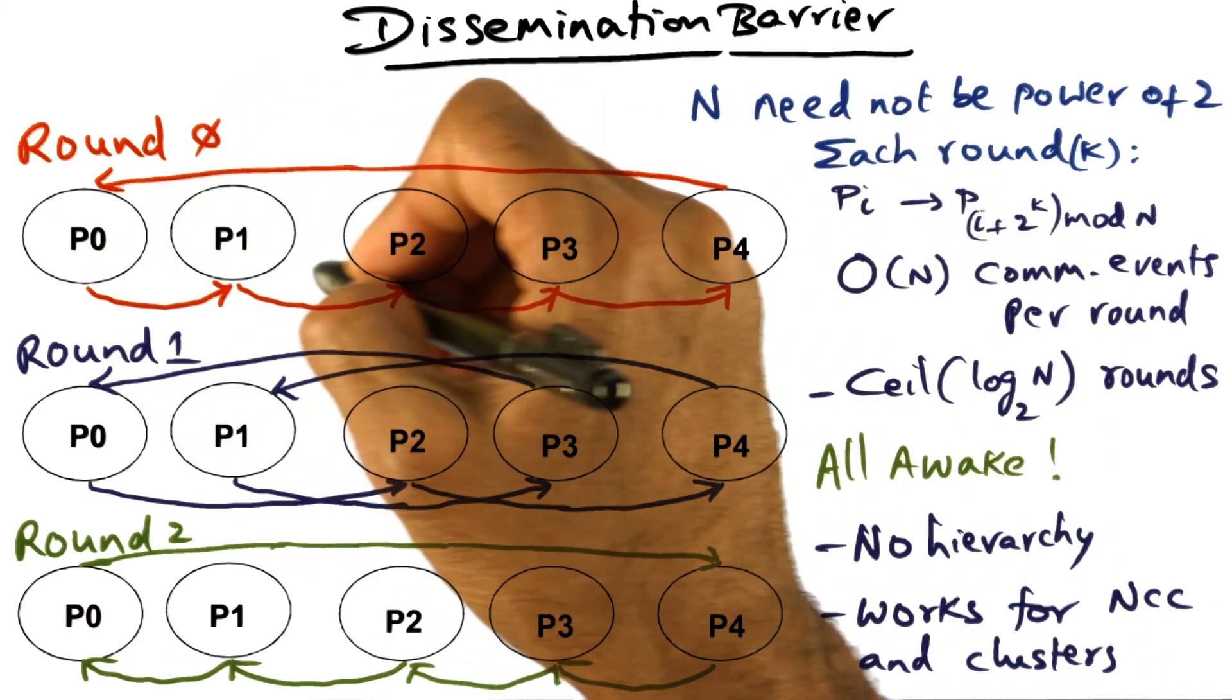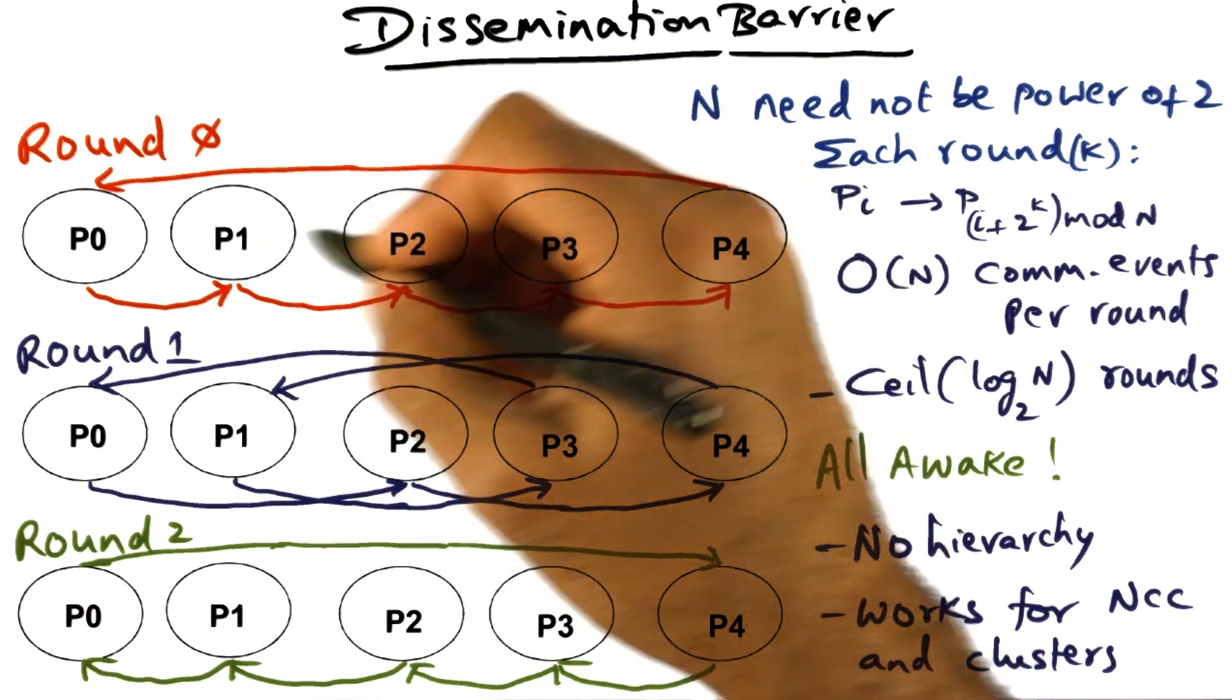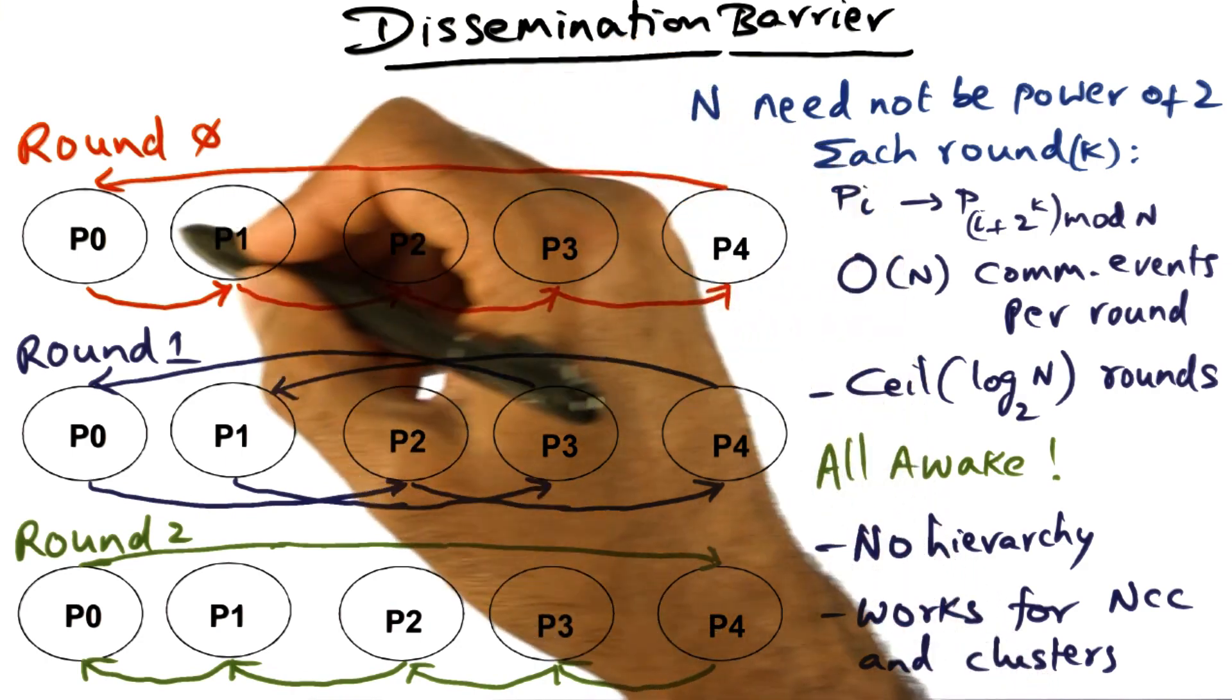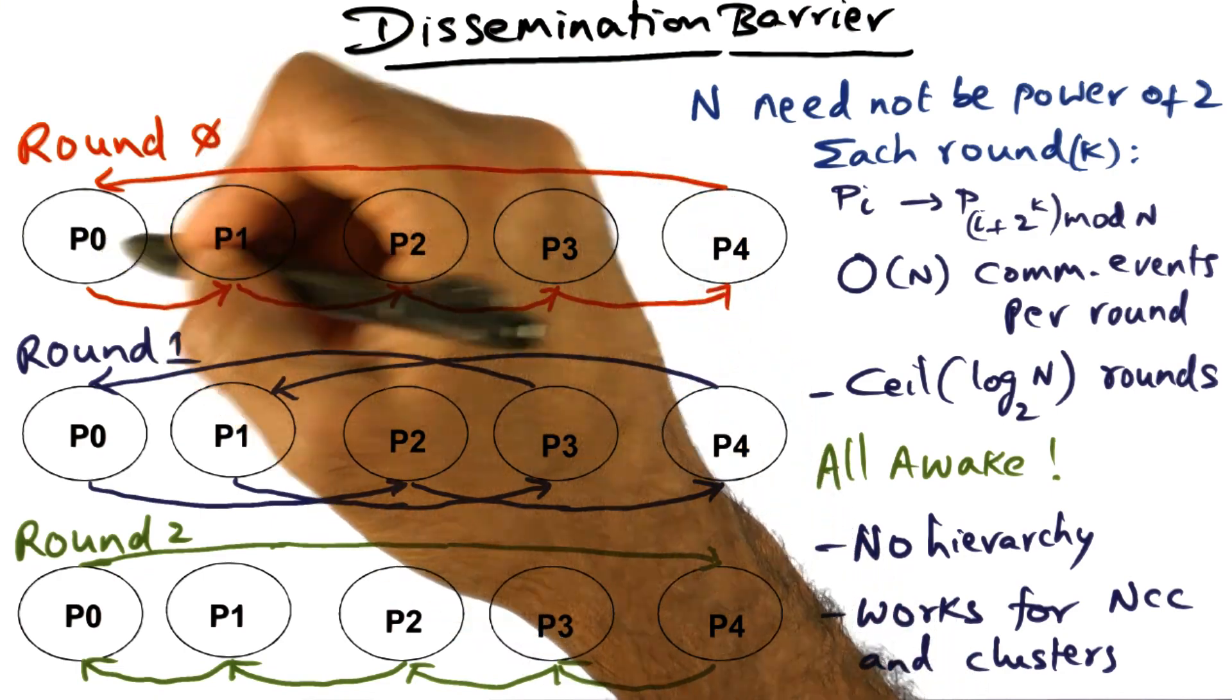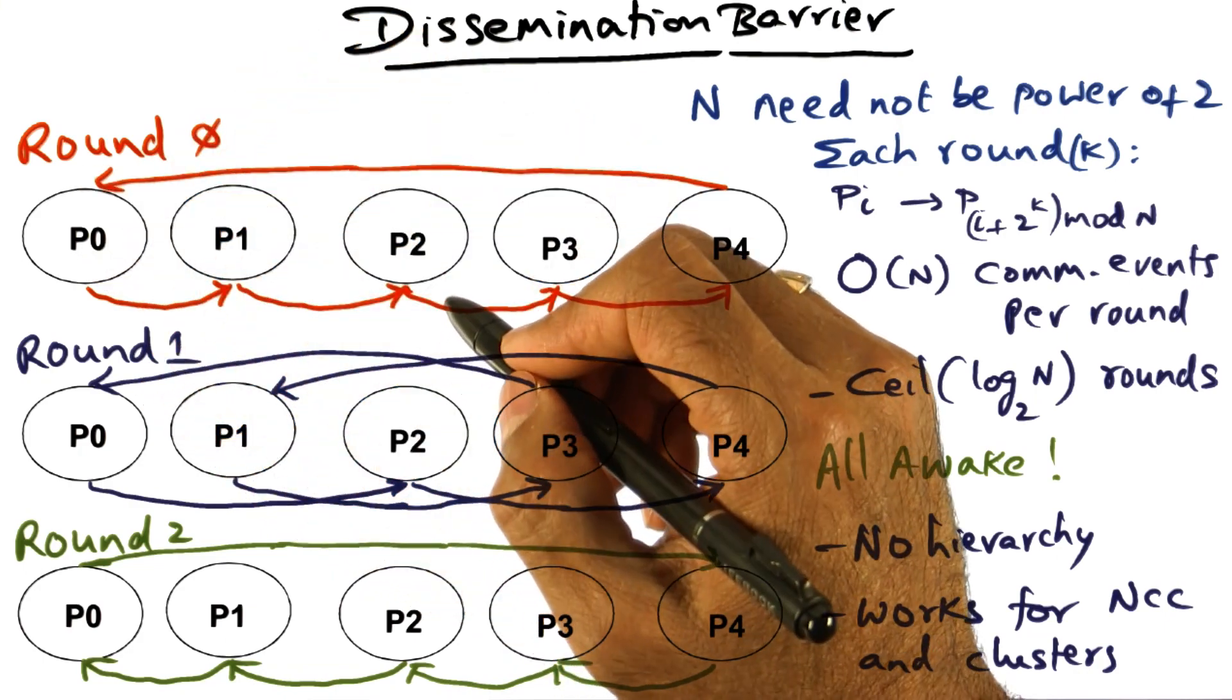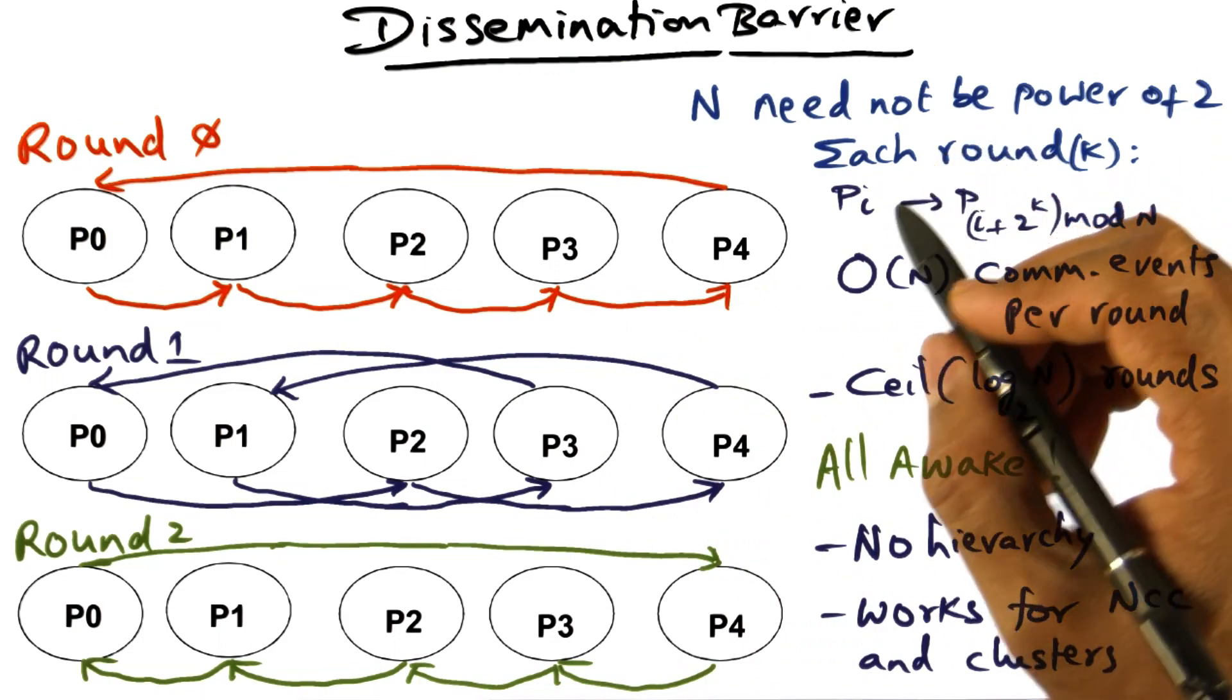And there is no waiting on anybody else. So every processor is independently making a decision to send a message. As soon as it arrives at the barrier, it's ready to send a message to its peer for that particular round. And of course, every processor can move to the next round only after it has received a corresponding message from its peer for this particular round. So as soon as that happens, it can move on to the next round of the dissemination barrier.